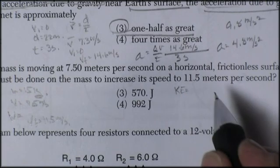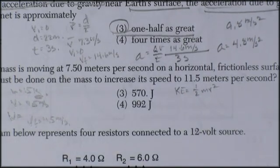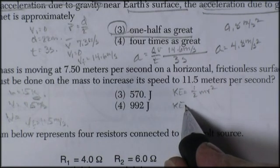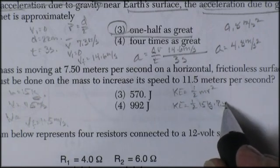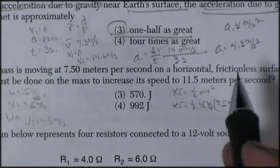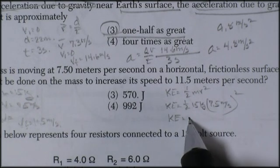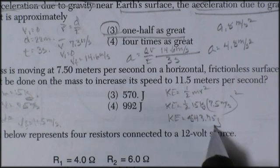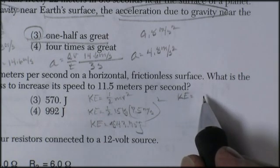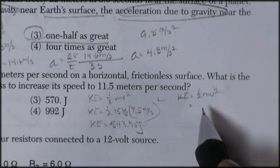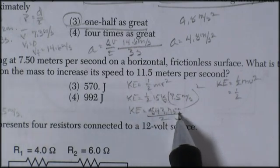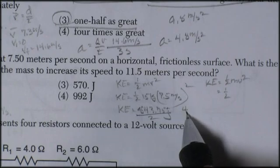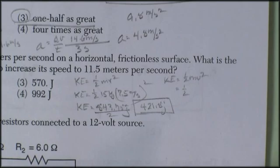So kinetic energy is one half mv squared. So the kinetic energy is one half of mass, fifteen kilograms, times 7.5 meters per second squared. So that's a kinetic energy of 843.75 joules. If I want to do the kinetic energy one half mv squared, one half of, oops, I forgot to take half of this. So the kinetic energy is 843.75 divided by two. So it gives me a kinetic energy of about 421.8 joules.